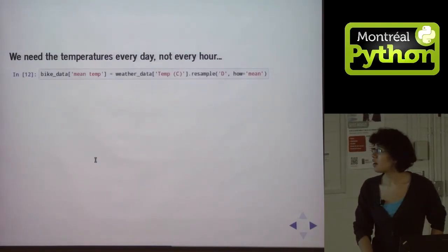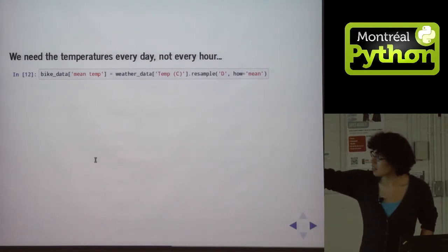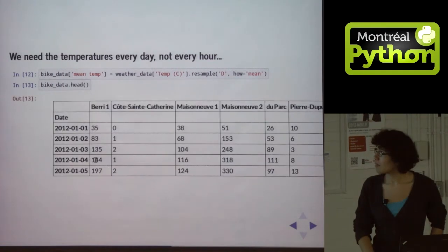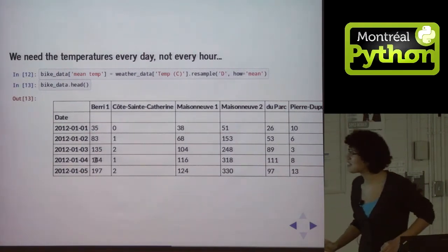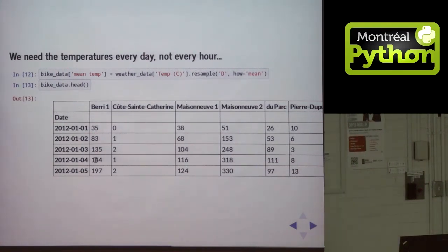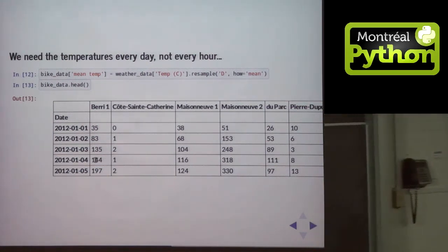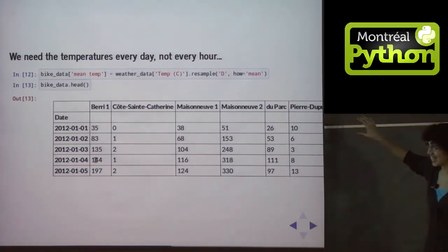So what we can do is call resample on the temperature column and say how equals mean. So we take the average temperature every day and make this. I seem to have lost the right side of my screen, but I promise you, right here is a mean temperature column, which contains the mean temperature every day.